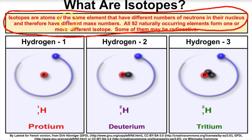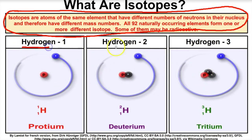For now, just understand that isotopes are atoms of the same element that have different numbers of neutrons in their nucleus and therefore have different mass numbers. What we're looking at right here are the three isotopes of hydrogen: protium, deuterium, and tritium. Every single one of these has one proton inside its nucleus, which is what makes each one of these hydrogen. It's the number of protons in the nucleus that determine what element an atom is.